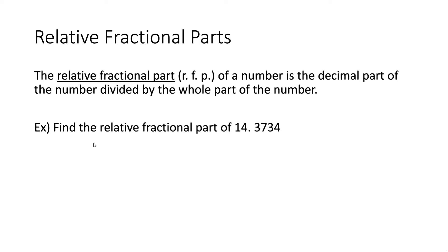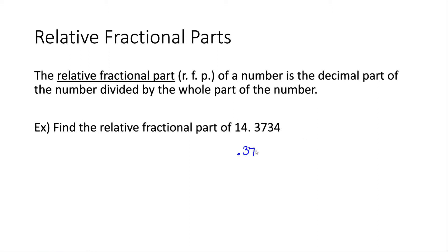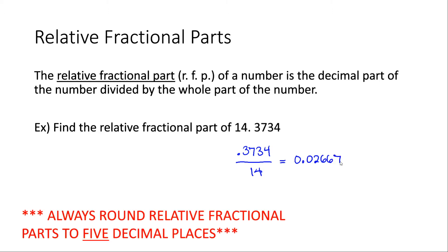Let's look at an example. We want to find the relative fractional part of 14.3734. We take the decimal part of the number, 0.3734, and divide that by the whole part of the number, 14. So we divide this and we end up getting 0.02667 as our answer. It's important to remember that with relative fractional parts, you always round them to five decimal places, because when comparing them they can be very close to each other, and you may need the extra decimal in order to decide which one is larger.